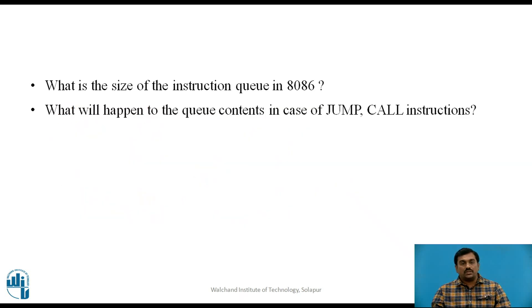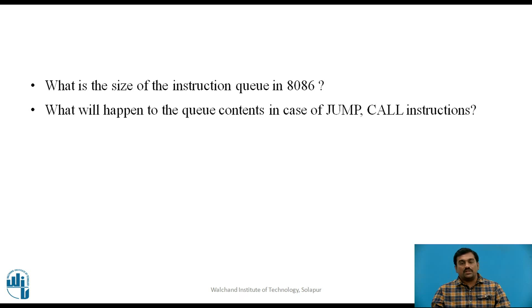Pause the video for 2 minutes and write down answers to the following questions. First: what is the size of the instruction queue in 8086? The size of the instruction queue in 8086 is 6 bytes. Second: what happens to the queue contents in case of jump or call instructions? The data inside the instruction queue is sequential in nature. Whenever the program contains a jump or call instruction, the CPU transfers control to some other memory location whose contents may not be inside the queue — so the CPU discards all contents of the instruction queue.